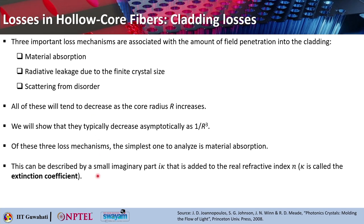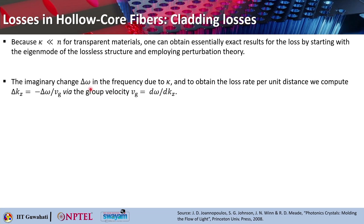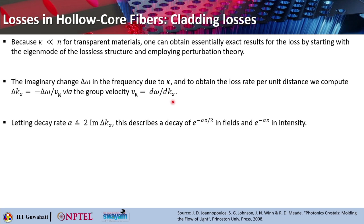Of these three loss mechanisms, the simplest one to analyze is material absorption. This can be described by a small imaginary part i·kappa added to the real refractive index n, where kappa is known as the extinction coefficient. Because kappa in most transparent materials is much smaller than n, one can obtain essentially exact results for the loss by starting with the eigenmodes of the lossless structure and employing perturbation theory. The imaginary change in frequency can be written as delta omega, and to obtain the loss rate per unit distance, we compute delta k_z equals minus delta omega divided by v_g, where v_g is the group velocity given by d·omega/d·k_z.